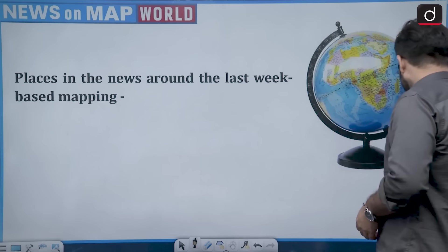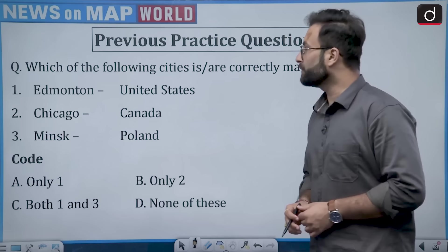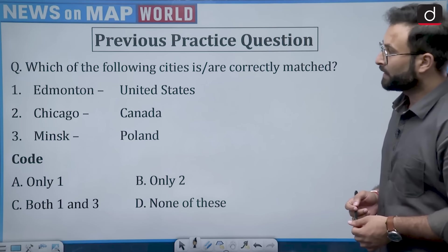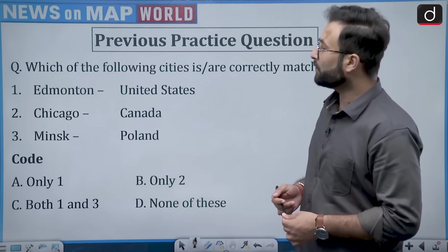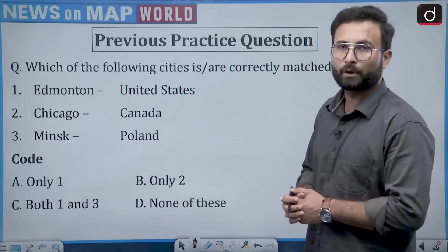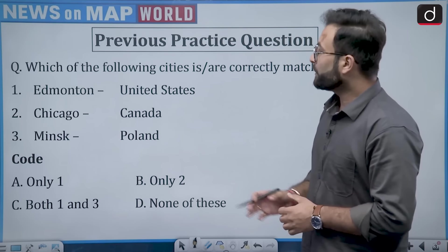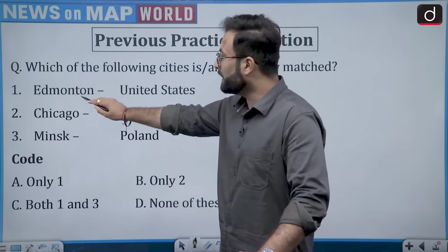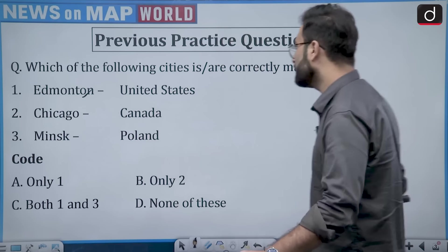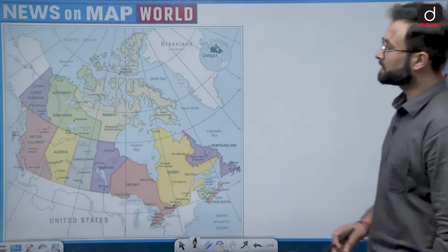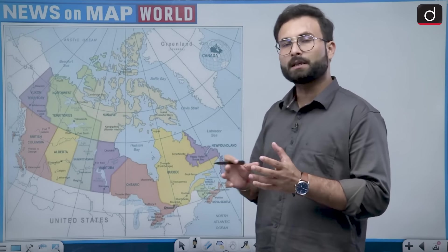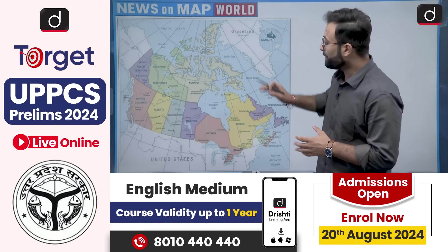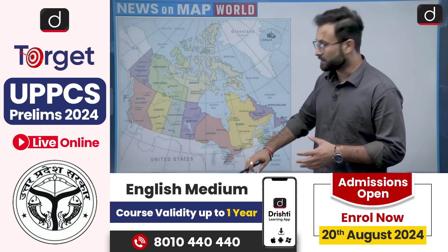The practice question was: which of the following cities is or are correctly matched? Edmonton - US, Chicago - Canada, Minsk - Poland. When we are talking about these three cities, we will be talking about their location. Starting with Edmonton — it is basically in Canada, but when you are looking at this particular map, you won't be able to identify where it is.